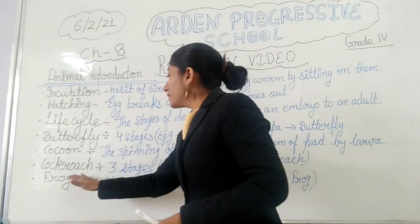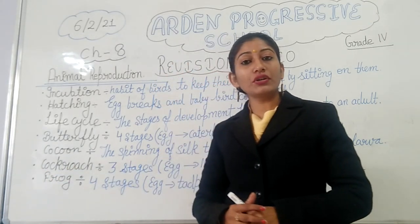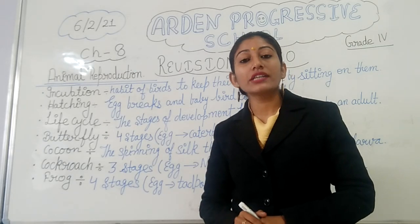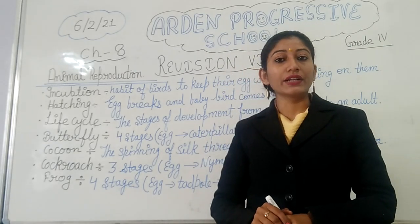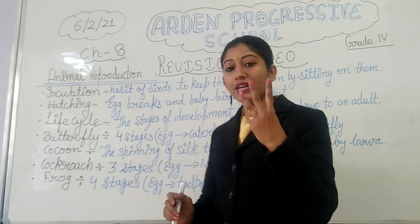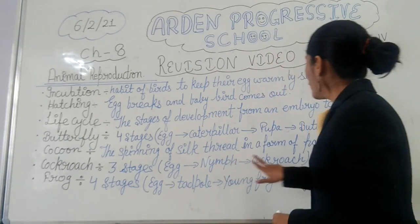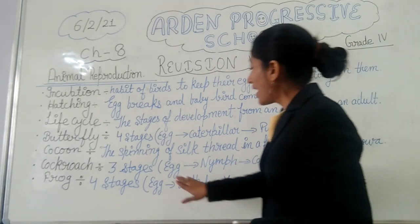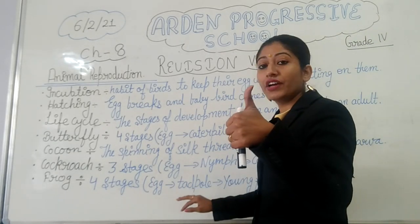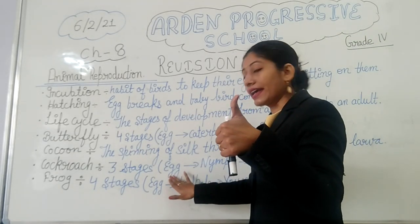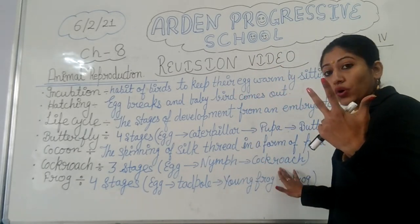Next one here is cockroach. About cockroach — how many stages does cockroach have? Cockroach has three stages in its life cycle. What are these? The first stage of the life cycle is egg. Then the second stage is nymph. And the third stage is cockroach.